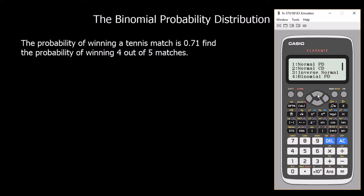Let's look at this question. We've got the probability of winning a tennis match is 0.71, so that's our probability, and we want to find the probability of winning four out of five total matches. We select binomial probability distribution — number four — and then two for variable. X is how many events we're looking at, so how many matches we're going to win. We want the probability of winning four matches.